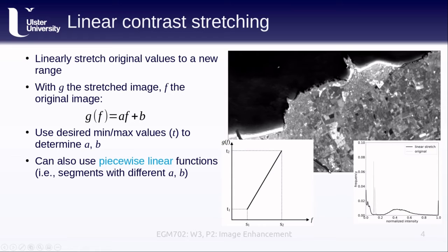We can also use a piecewise linear function. That is to say we have segments that have different values of A and B. But we want to make sure that they are only ever increasing as the value in F increases, so they're monotonically increasing. If they are decreasing at any point, then we're going to end up flipping the relative order of the original pixel values.